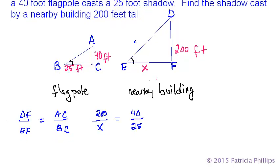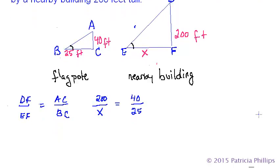Anybody who's been in an algebra class knows that all we need to do now is cross multiply and divide. So we're going to end up with 40X equals 200 times 25, which is 5000.